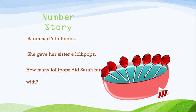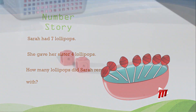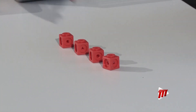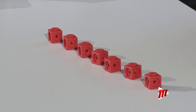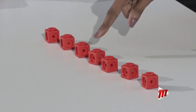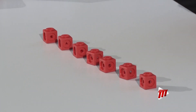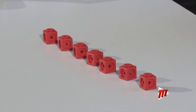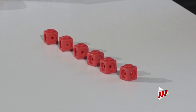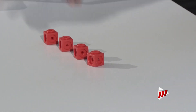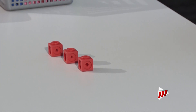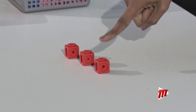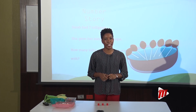I'm not going to count — I want you to count for me. Did you get seven? Let's check: one, two, three, four, five, six, seven. Good. Sarah had seven lollipops and she gave her sister four, so I'm going to take away four — one, two, three, four. How many lollipops are left? One, two, three. Seven take away four equals three.